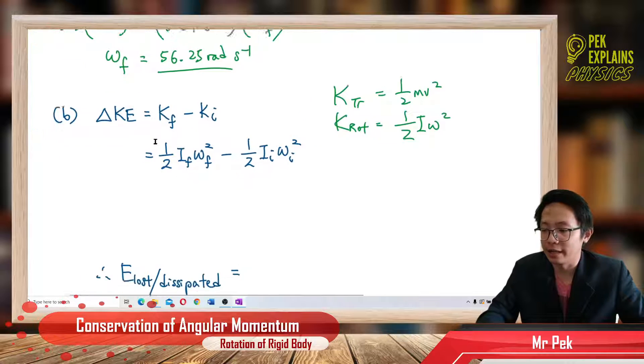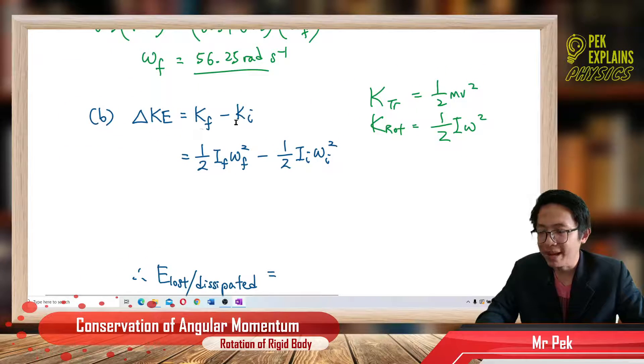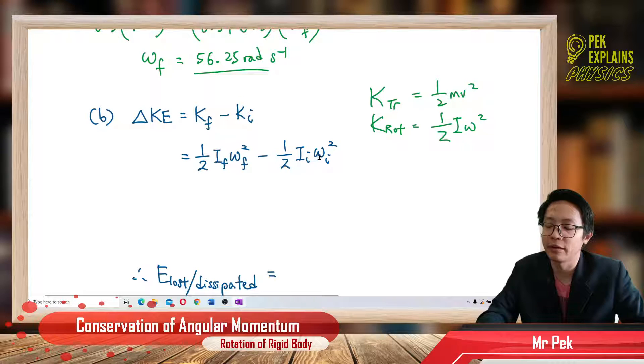So: final kinetic energy minus initial kinetic energy equals half I omega squared final, minus half I omega squared initial. Just put in all the values.